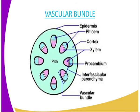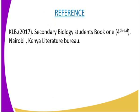We are going to have our last tissue, which is the vascular bundle. The vascular bundles mainly consist of the xylem and the phloem. The function of the xylem is to transport water and mineral salts, while the phloem is for the transportation of food. According to our diagram, on the vascular bundles we have the epidermis, the cortex, the xylem, the procambium in the vascular parenchyma, and the vascular bundle.